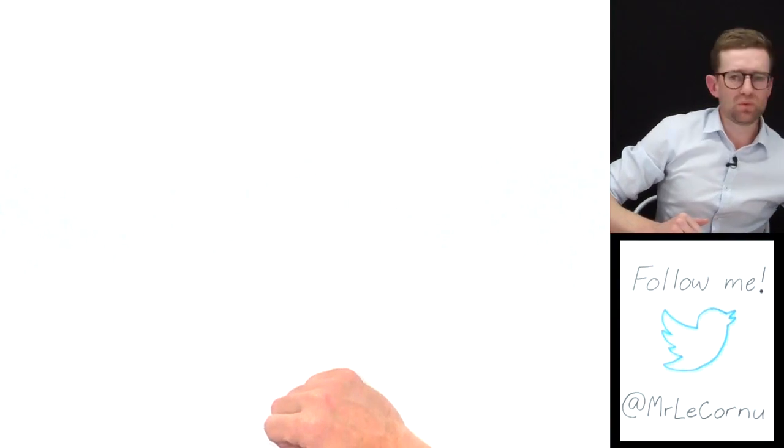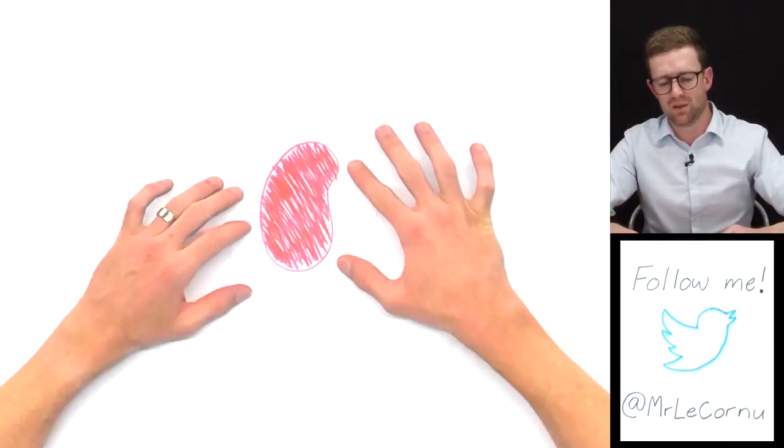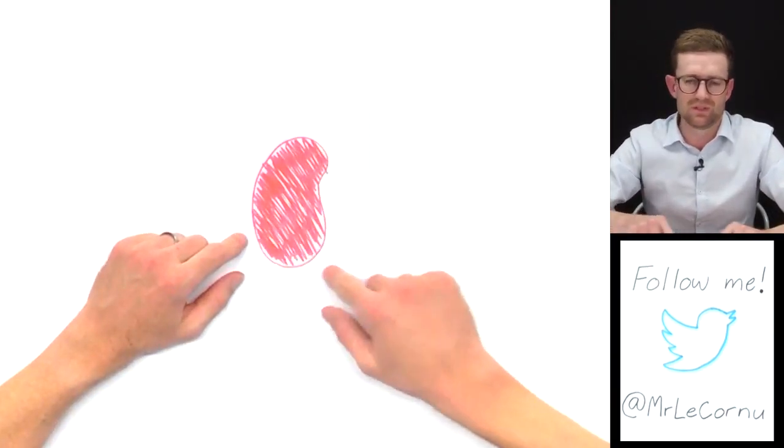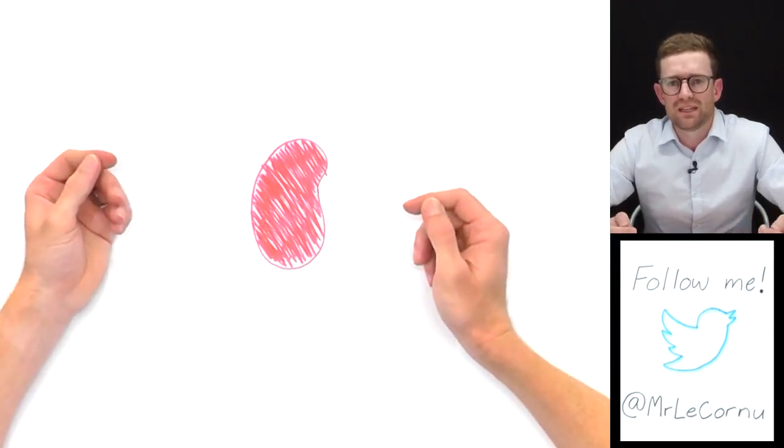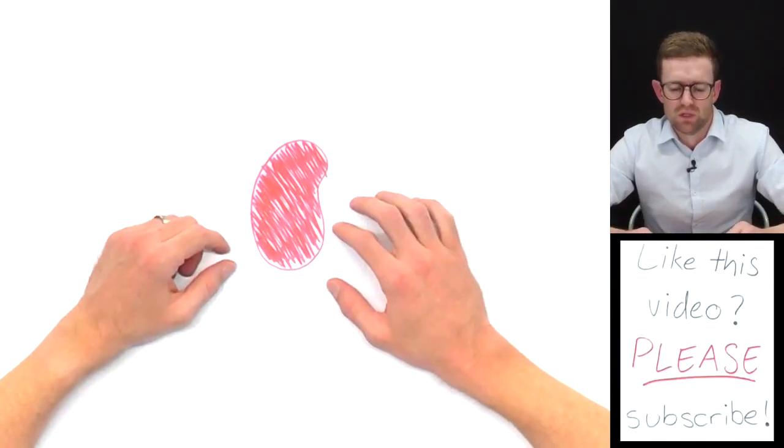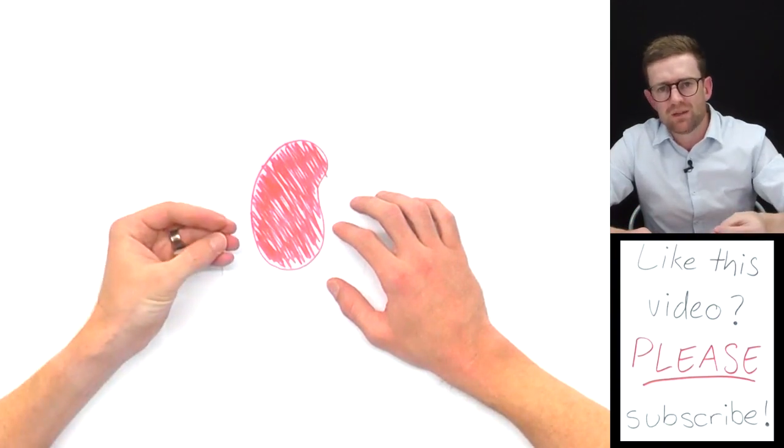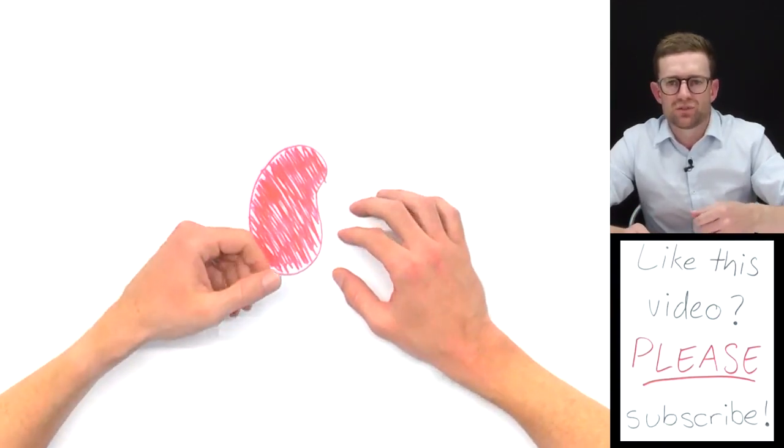Another good example of active transport in our body - this is a simple representation of a kidney. The cells of our kidneys are responsible for filtering our blood. As blood passes through...